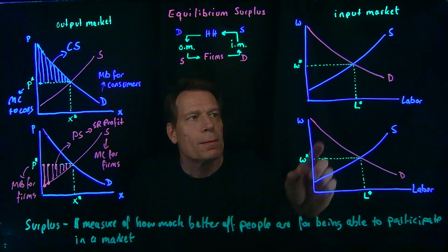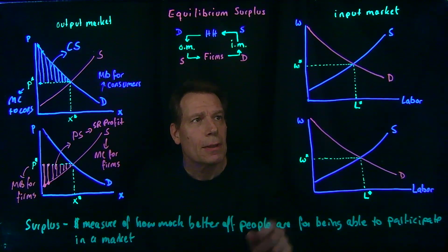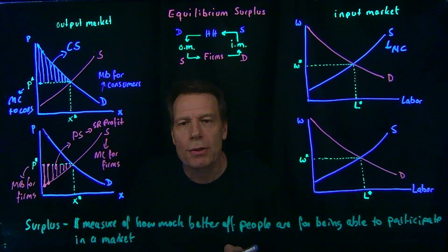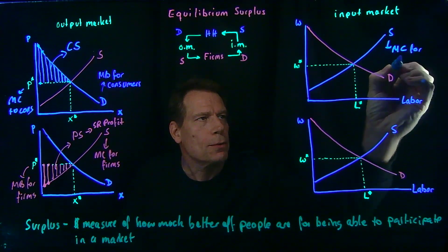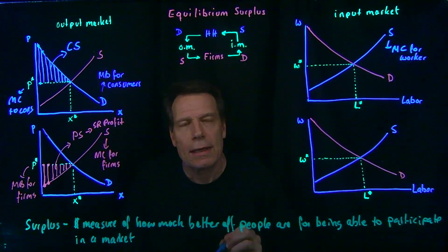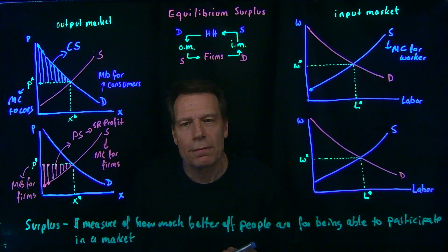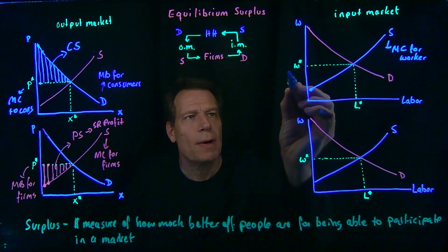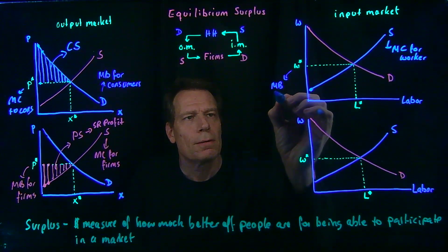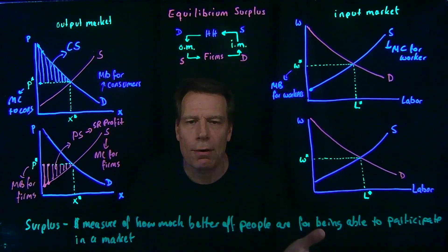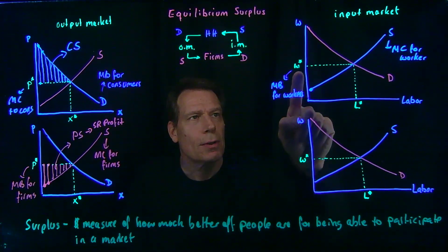What about input markets? Households contribute the supply curve in the labor market. That supply curve is a marginal opportunity cost for households or workers. It tells us there's some worker willing to work for this amount. The marginal benefit for workers in the labor market is the wage they get to collect — so the wage is the marginal benefit for workers. Workers work so long as the marginal benefit from an additional hour of working is larger than the marginal cost, so they work until this point.